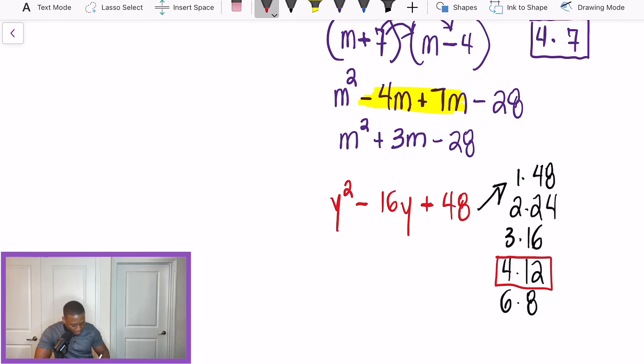So, as we write this out now, we have (y __4) and then we have (y __12). And based off our rules, we don't even have to think about our signs. If C is positive, that means our signs are going to be the same. And when we add them, it's negative. That means our factors are both going to be negative.